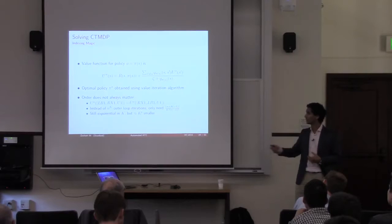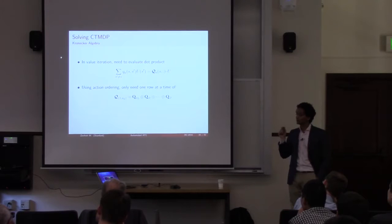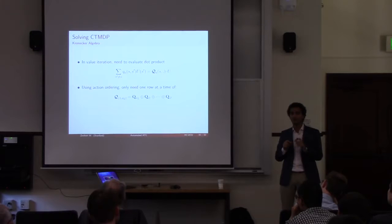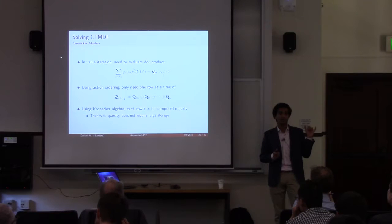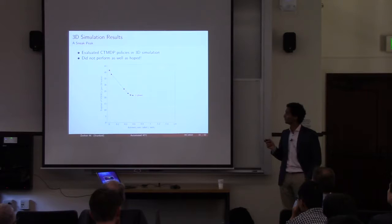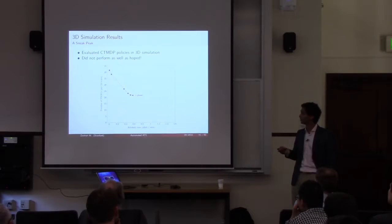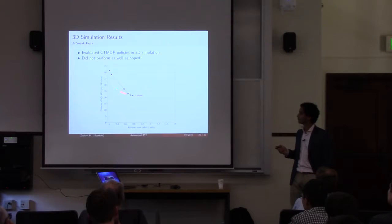We also realize that to compute the dot product we only need one row at a time of these matrices, and we can ensure these matrices have special structure by leveraging the fact that actions have special structure — specifically, we can ensure this tail is always the Kronecker sum of the same matrix. This allows us to compute these dot products very fast without requiring a lot of storage. We ran this and it didn't work as well as hoped. Looking at the results — vertical axis showing simulations for number of NMACs in the pattern, and horizontal axis showing rate of advisories issued — as we issue more advisories, the NMAC rate reduces, but it plateaus at some point.